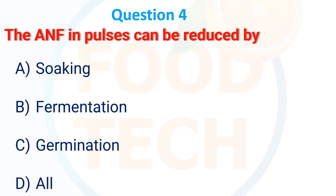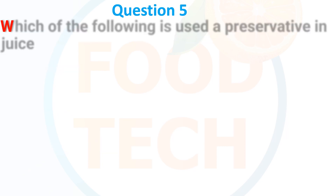The antinutritional factors of pulses can be reduced by: A. Smoking, B. Fermentation, C. Germination, D. All. The answer is D. All.